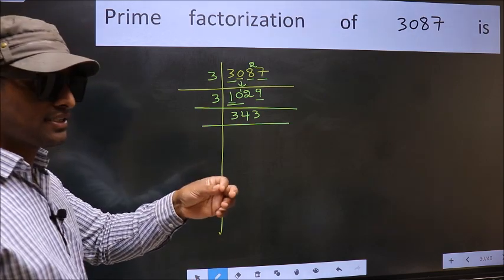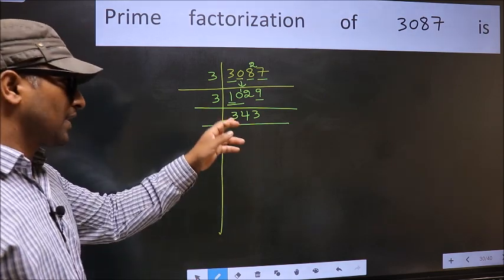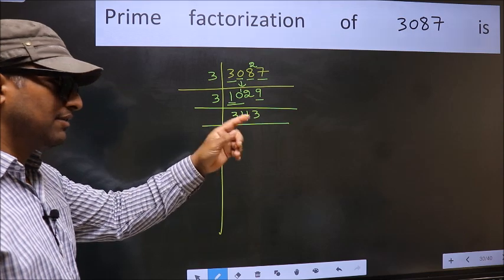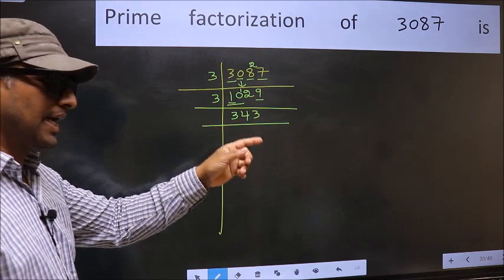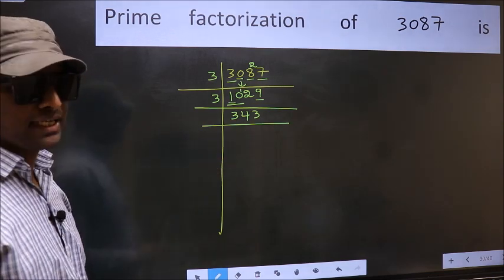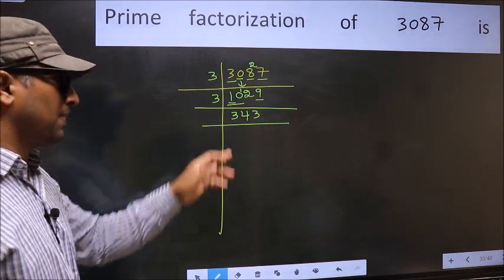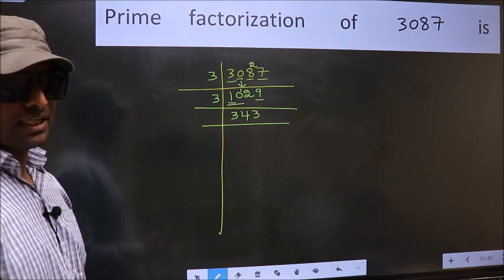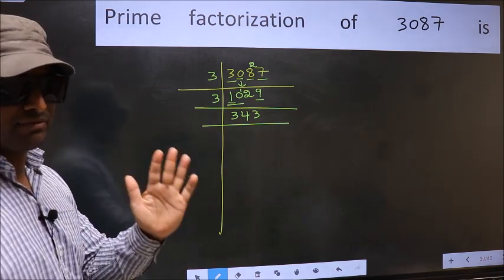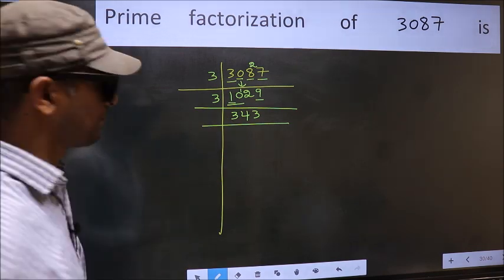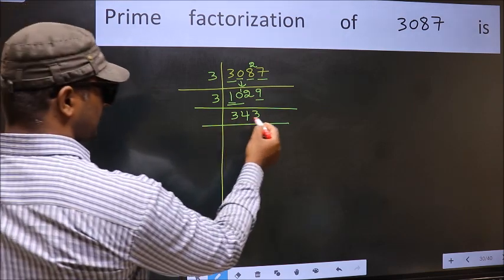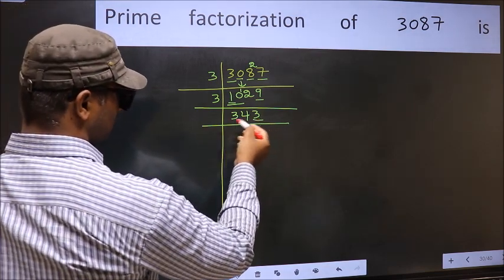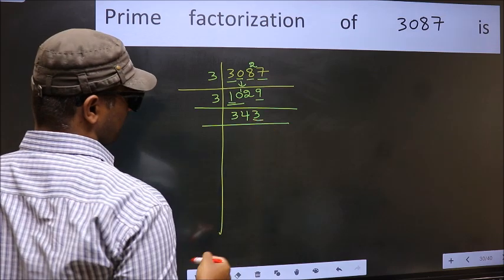Now to check whether 343 is divisible by 3 or not. Add the digits: 3 plus 4 plus 3 equals 10. And 10 is not divisible by 3, so this number is also not divisible by 3. Next prime number 5: the last digit is neither 0 nor 5, so this is not divisible by 5.